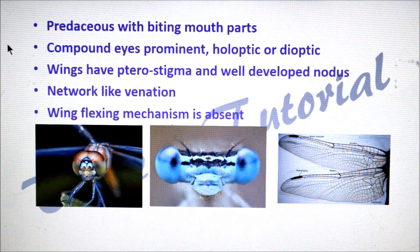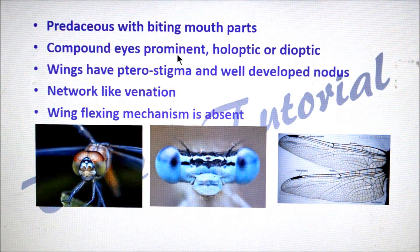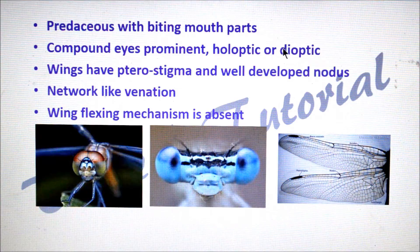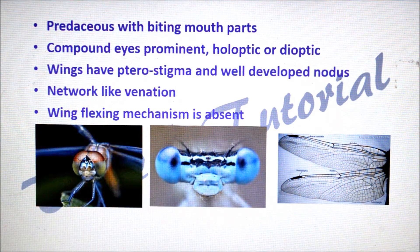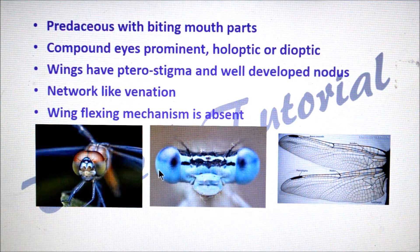If you look at the order level characters, they are predaceous with biting type of mouth parts. Compound eyes are prominent — holoptic in dragonflies and dioptic in damselflies. Holoptic means compound eyes are large and meet dorsally, whereas dioptic means compound eyes are small and they are well separated.